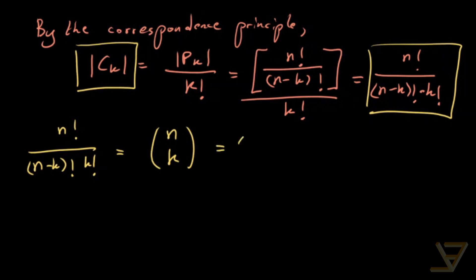And this is stated as n choose k because it's the number of ways of choosing k elements out of n elements without caring about the order. Thanks for watching and I'll see you next time.